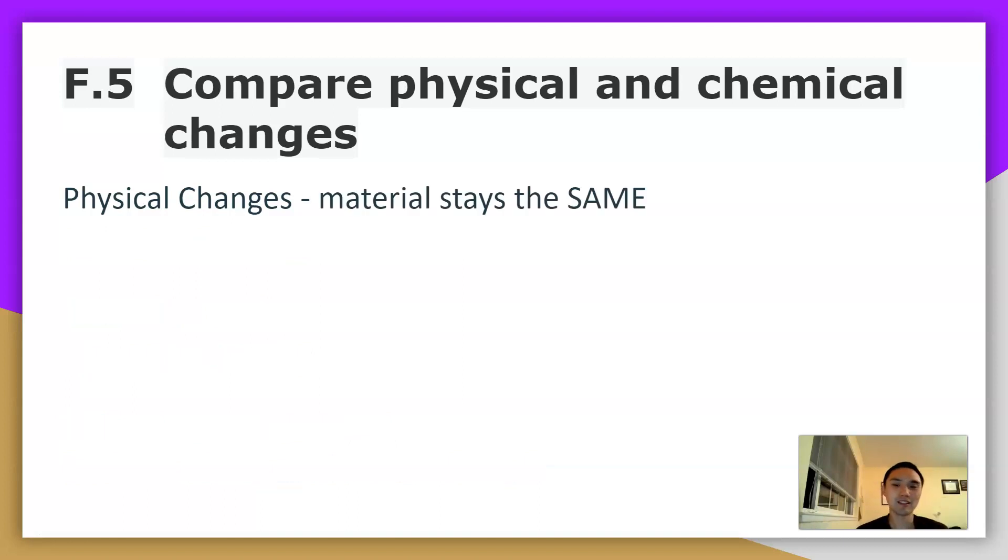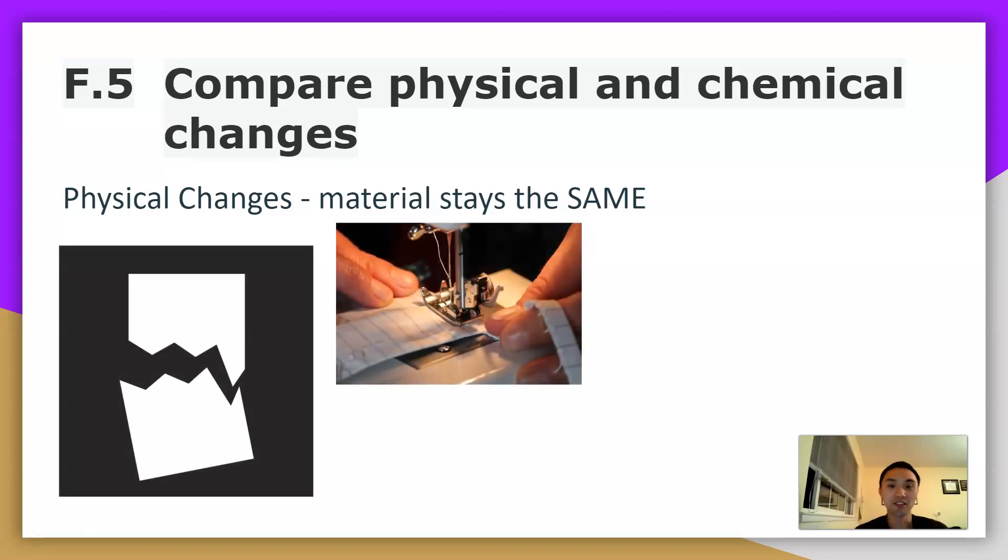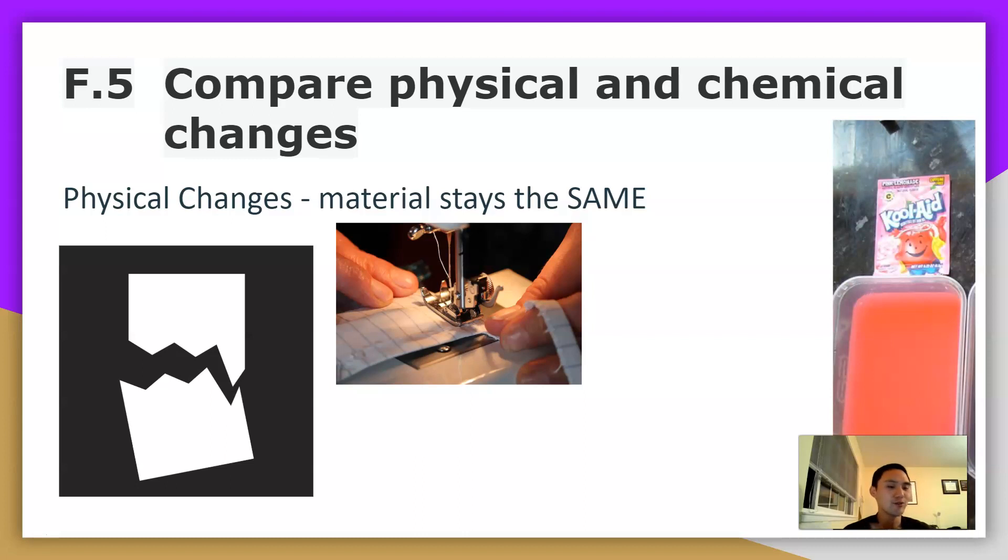Physical changes basically means that the material stays the same before and after you do whatever action you do to it. So some common examples of physical changes would be like ripping a piece of paper, sewing, putting it together. That's also a physical change because the material still is the same before and after you sew. If you happen to mix anything into water, that's typically a physical change. So Kool-Aid is a common example of that.